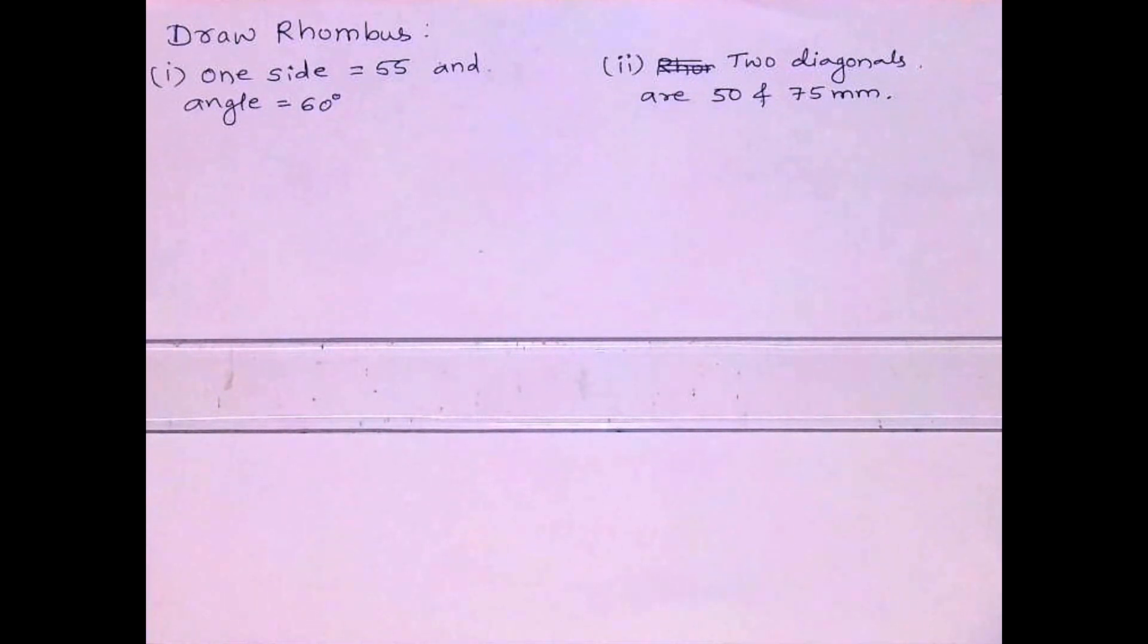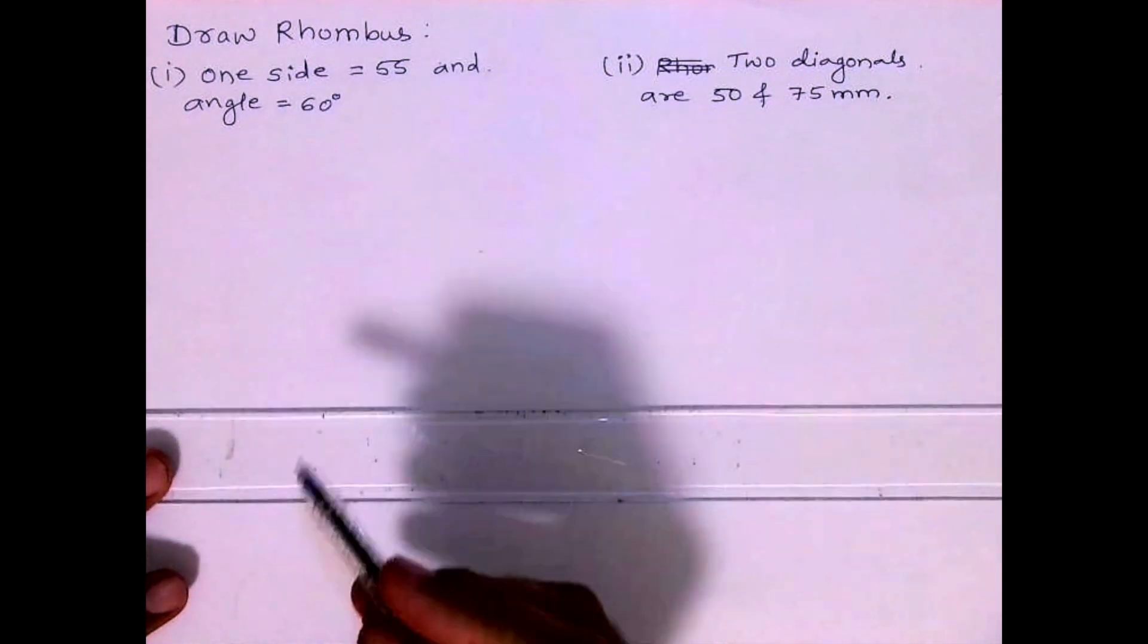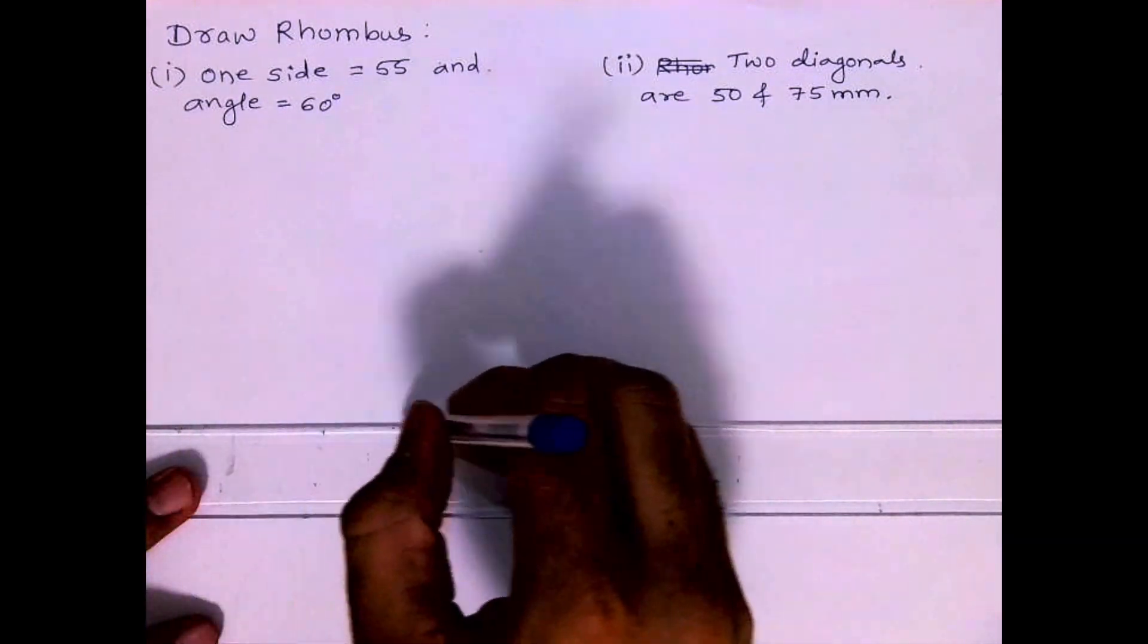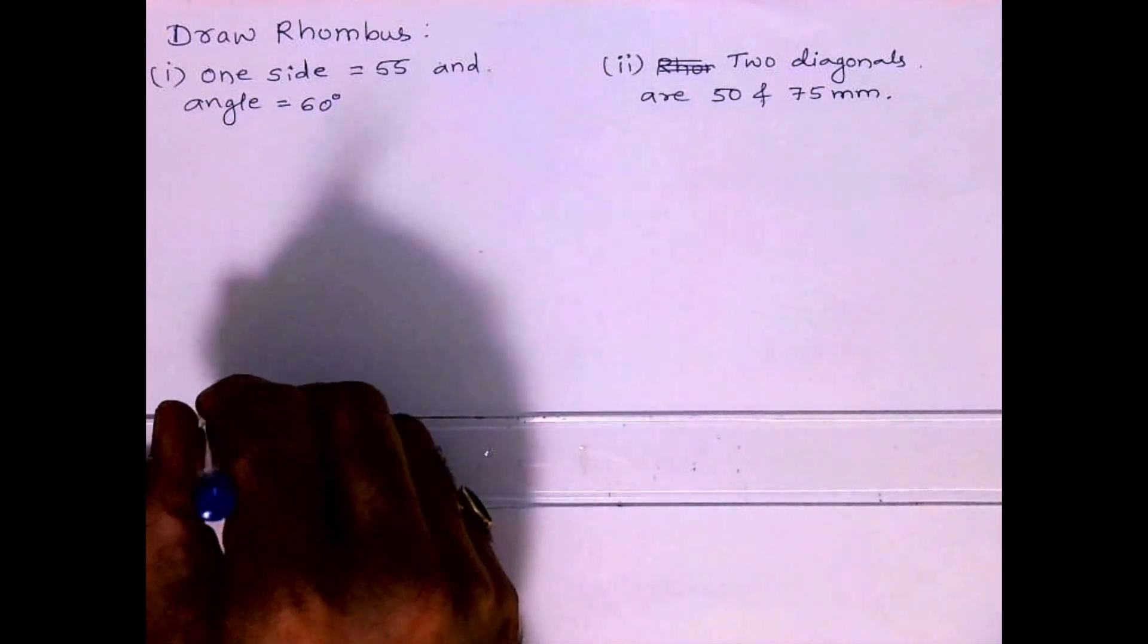Welcome to technical drawing. Today we'll draw a rhombus. First problem: one side is 55mm and angle is 60 degrees. Second problem: two diagonals are 50mm and 75mm. So in the first problem, first we will draw one side of the rhombus which is 55mm.